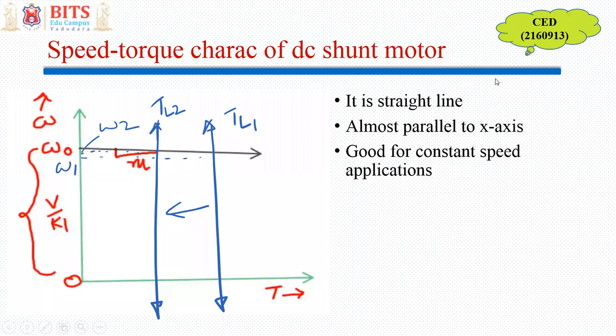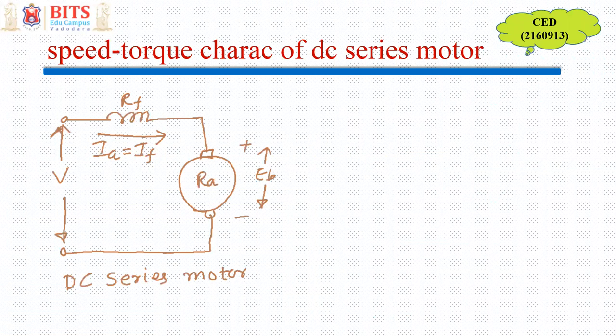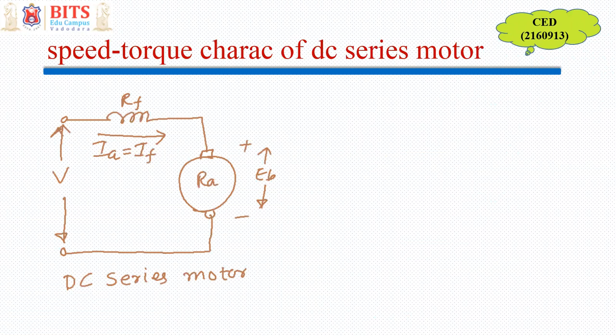So now we are going to discuss about the DC series motor. So DC series motor, as the name suggests, is nothing but the winding field winding is connected in series with the armature circuit. So whatever is the armature current same is flowing through the field winding. So armature current is same as field current. So in this case, the flux is not constant.